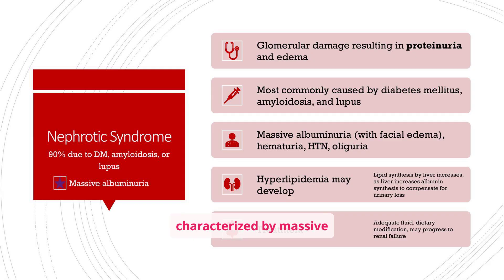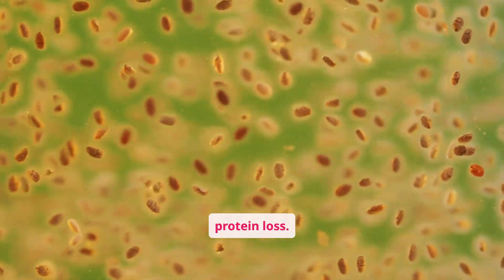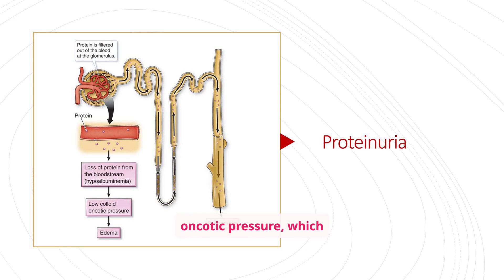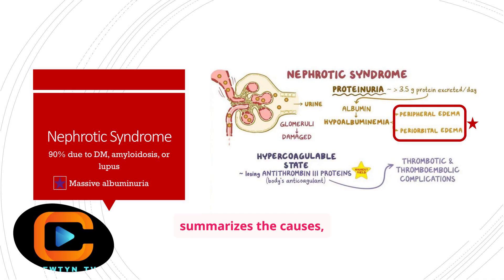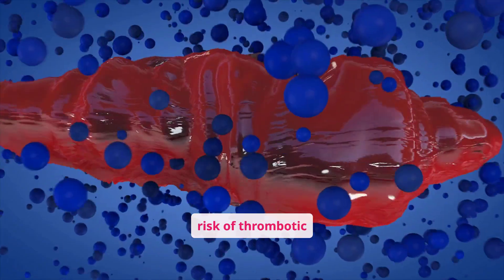Nephrotic syndrome is characterized by massive albuminuria, often due to diabetes mellitus, amyloidosis, or lupus. The glomerular damage leads to proteinuria and edema. Hyperlipidemia may also develop as the liver increases lipid synthesis to compensate for urinary protein loss. Protein is filtered out of the blood at the glomerulus, leading to hypoalbuminemia and decreased colloid oncotic pressure, which causes edema. This illustration also highlights the hypercoagulable state and the risk of thrombotic complications.